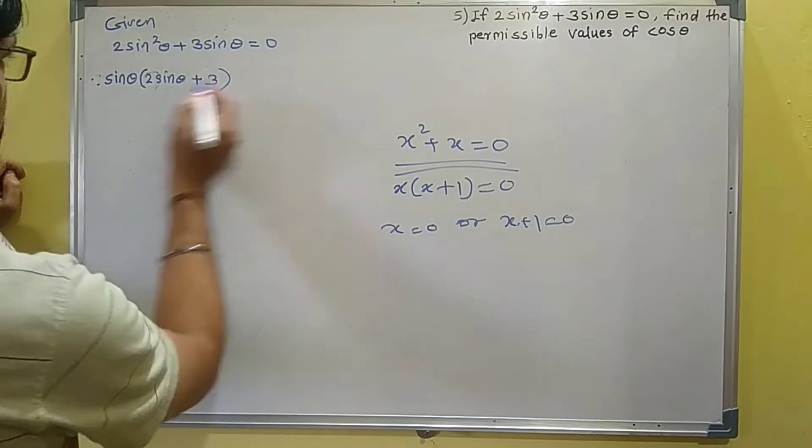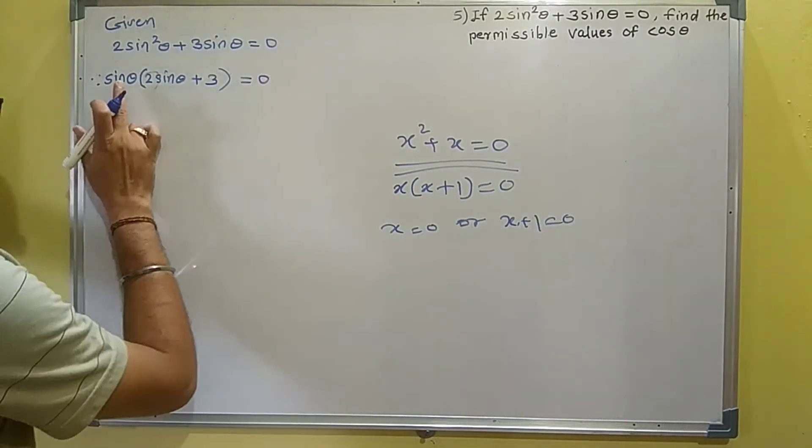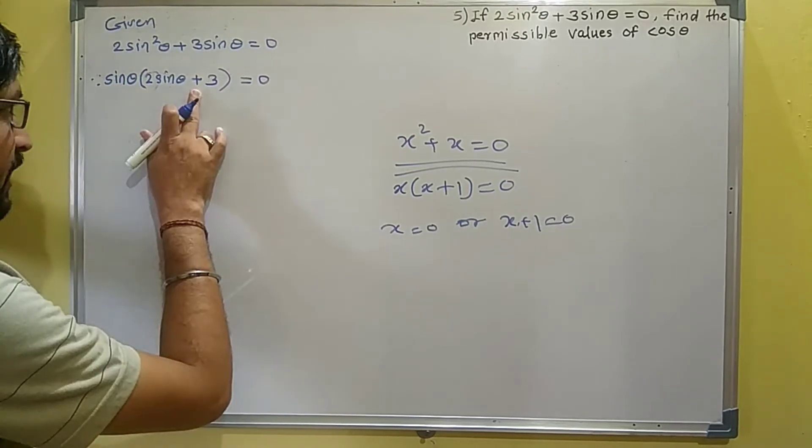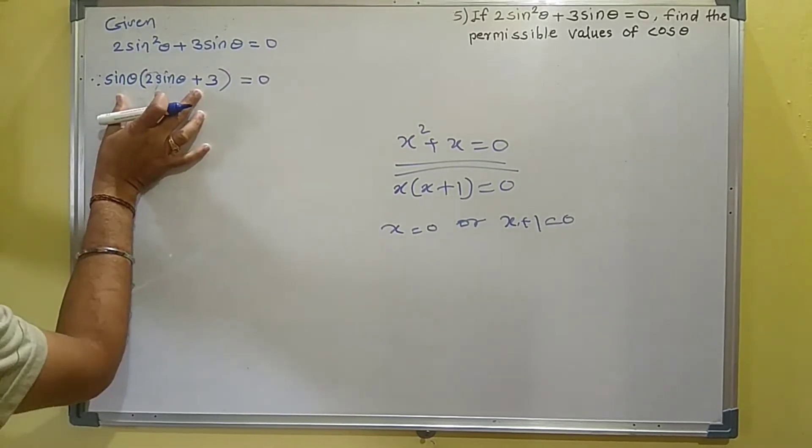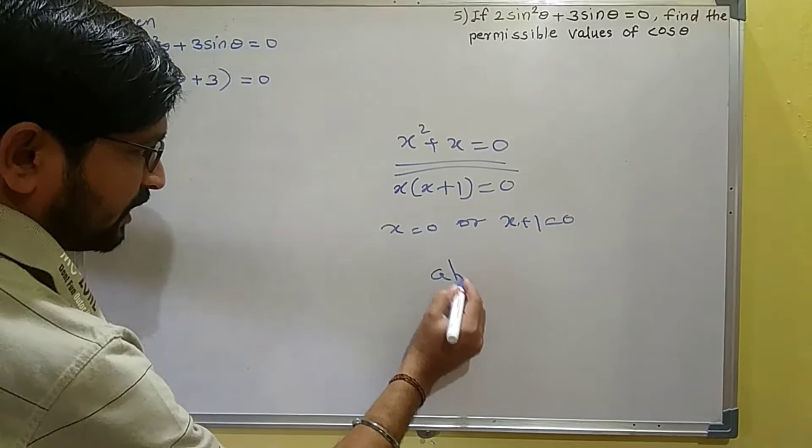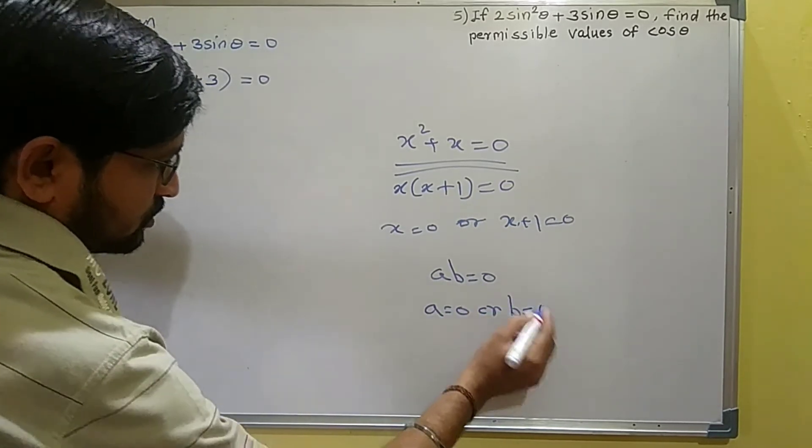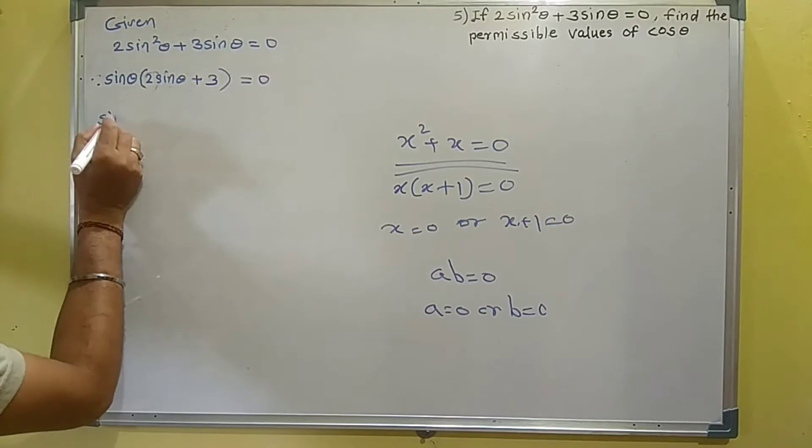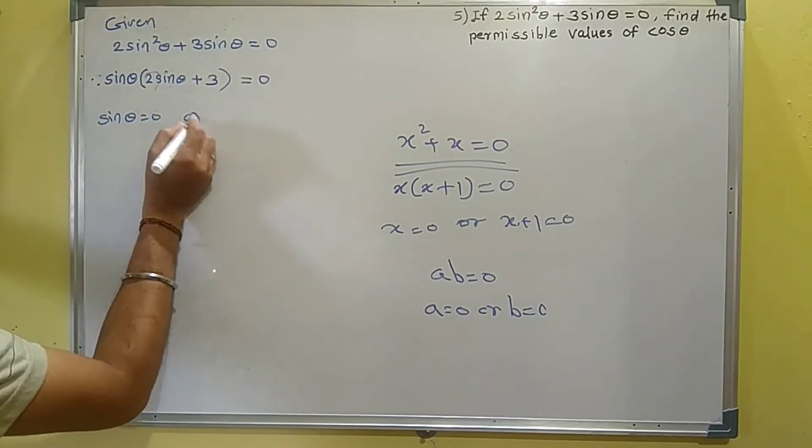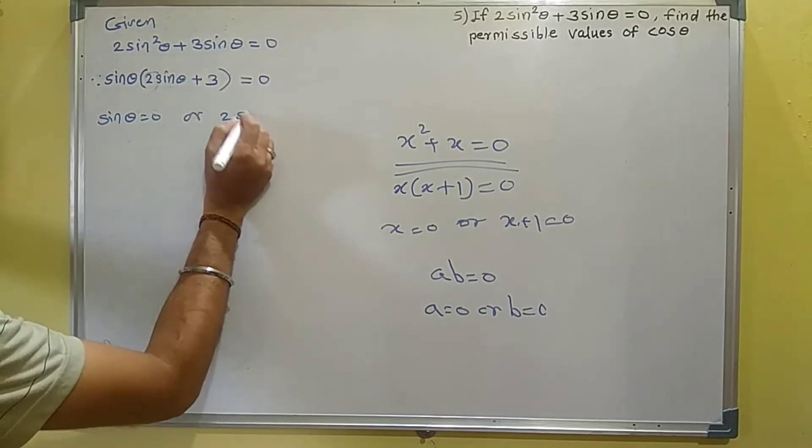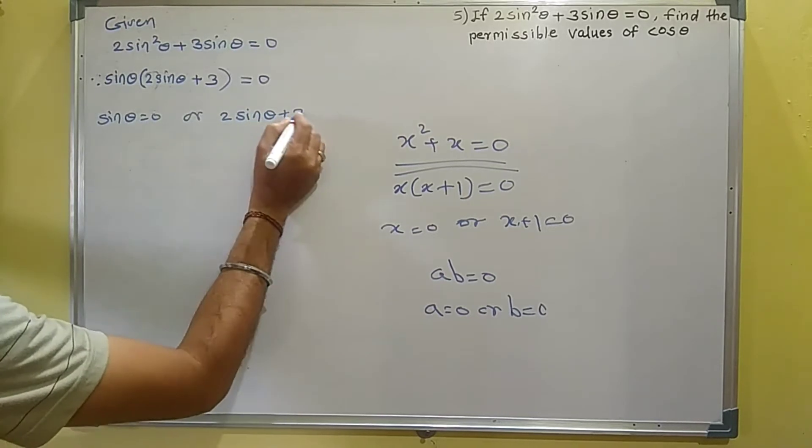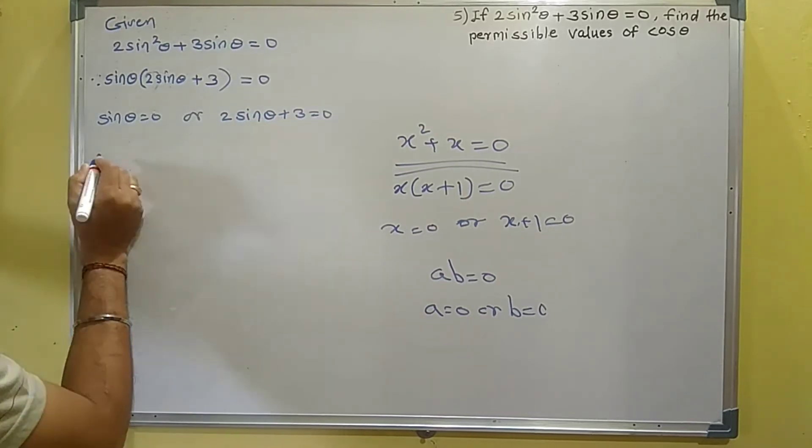Therefore: sinθ(2sinθ + 3) = 0. When a product of two factors equals zero, either the first factor is zero or the second factor is zero. So either sinθ = 0 or 2sinθ + 3 = 0.